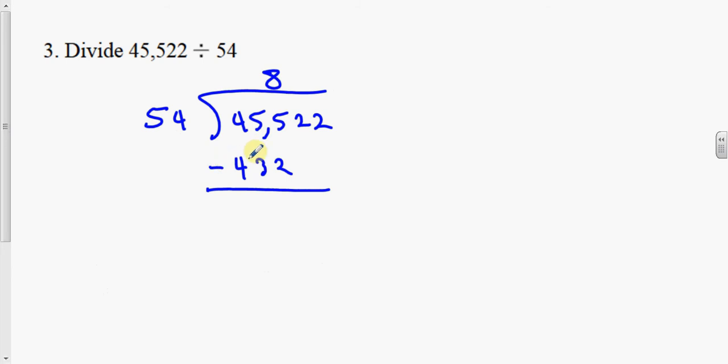Number 3. We want to divide. We divide 54 into 45,522. Alright. So let's say we check, 54 goes into 455 8 times. 8 times 54 is 432. Draw a line and then subtract. When we do we bring down. 5 minus 3 is 2. 5 minus 2 is 3. Then we bring down this 2.